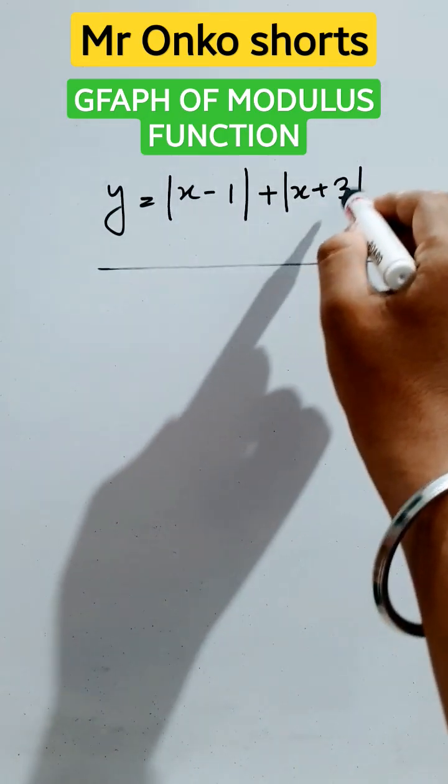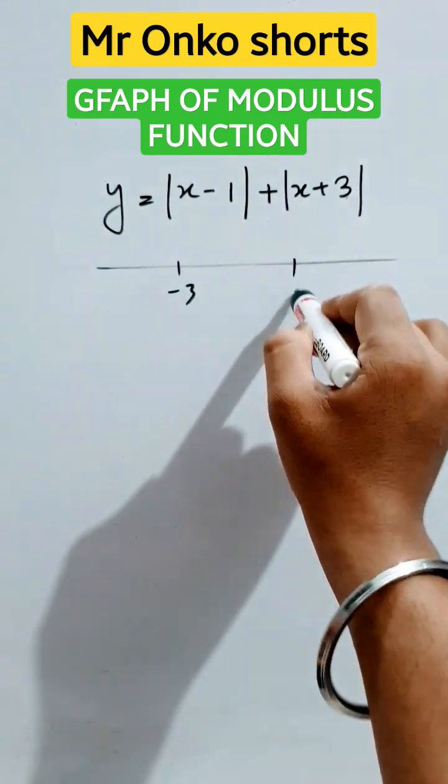So first of all, let's learn the trick. First, find the critical values. It's minus 3 and 1.